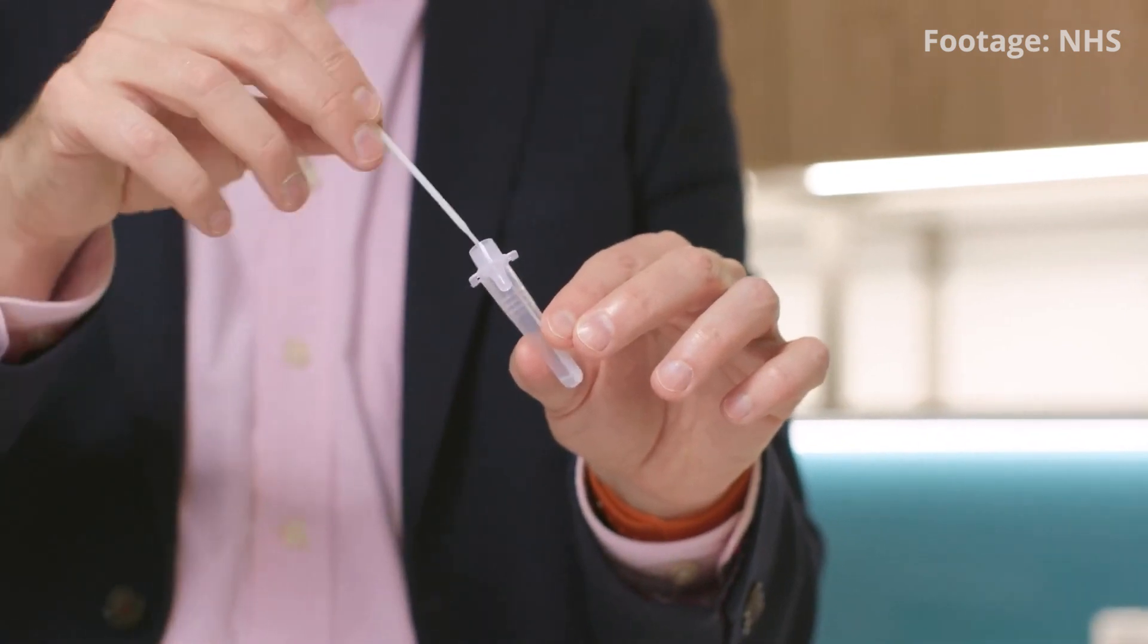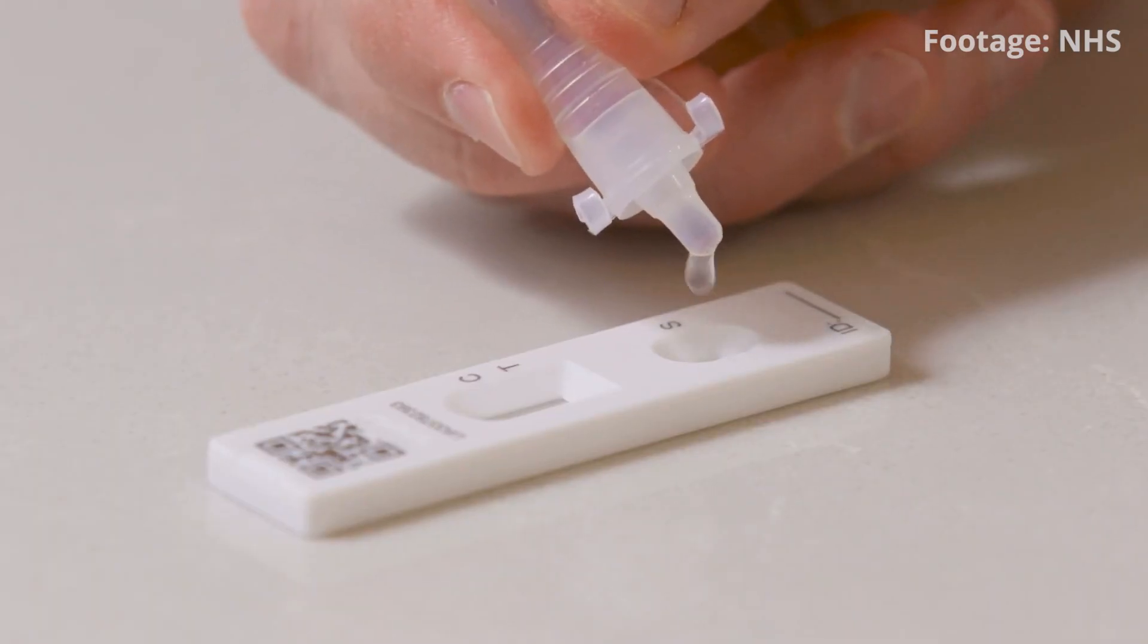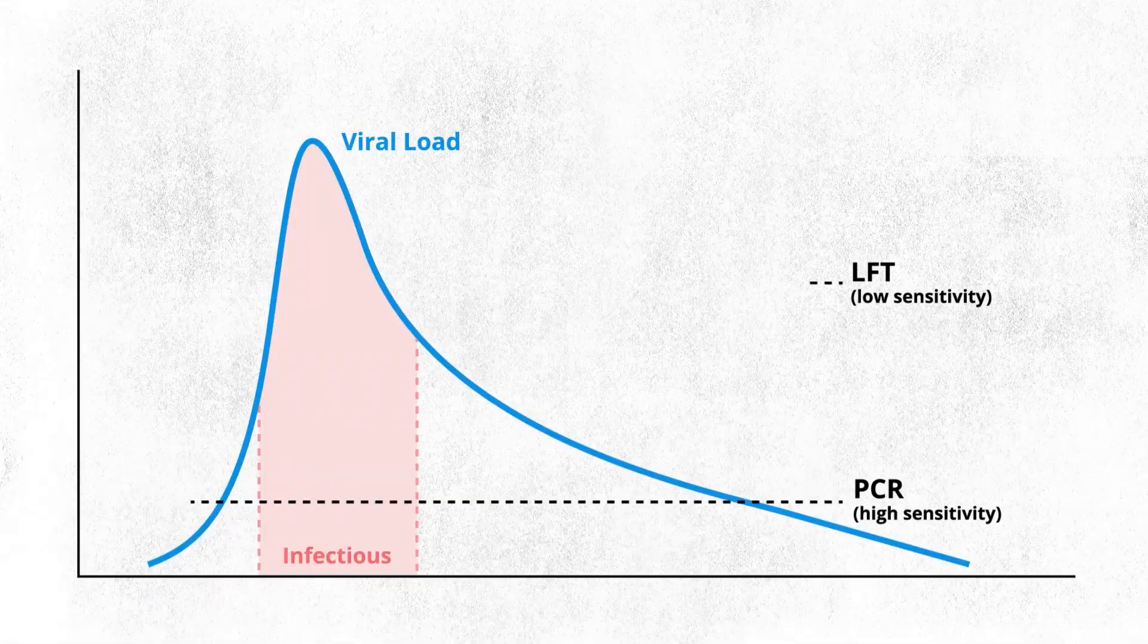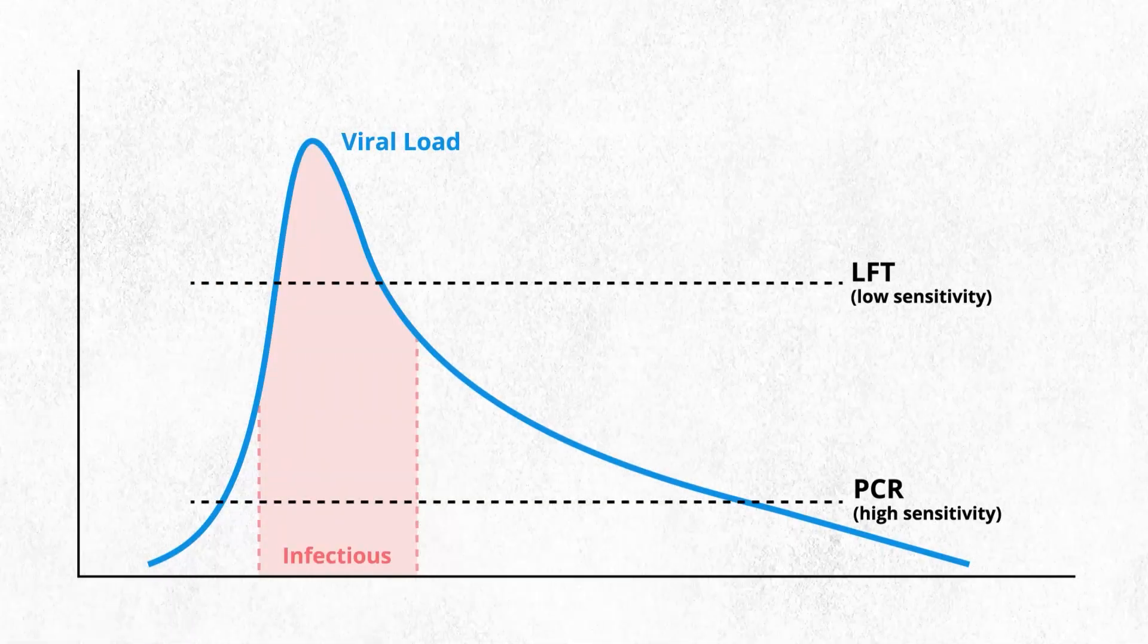The alternative test is the lateral flow test that has a lower sensitivity and only picks up people that have high viral loads. Lateral flow tests are easy and quick to use. They deliver a result in about 20 minutes but they're very insensitive because they only detect people who have very high viral loads.